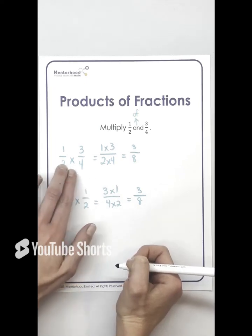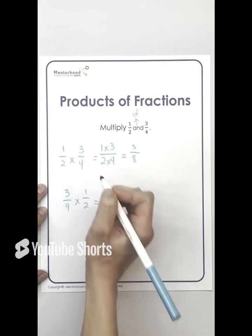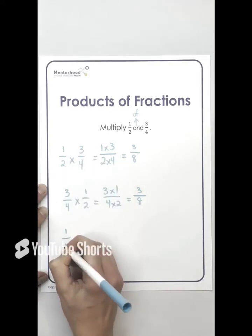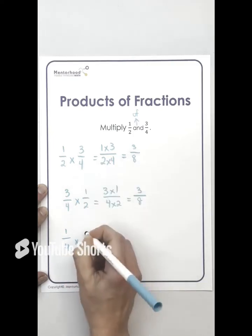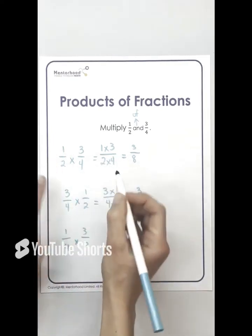Now, what if I had just switched the bottoms instead of the tops, or I just switched the tops instead of the bottoms? So my new fractions would be, this would be one over four times three over two. So now I've got entirely new fractions, but all I did, see here,